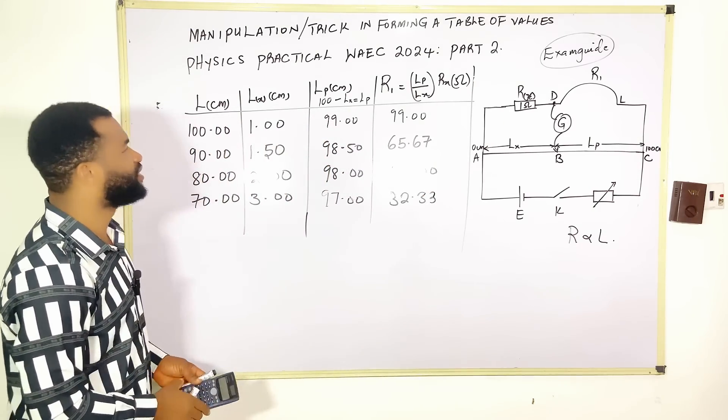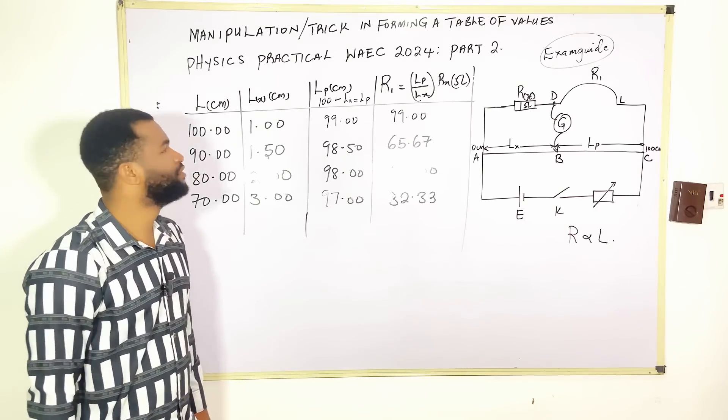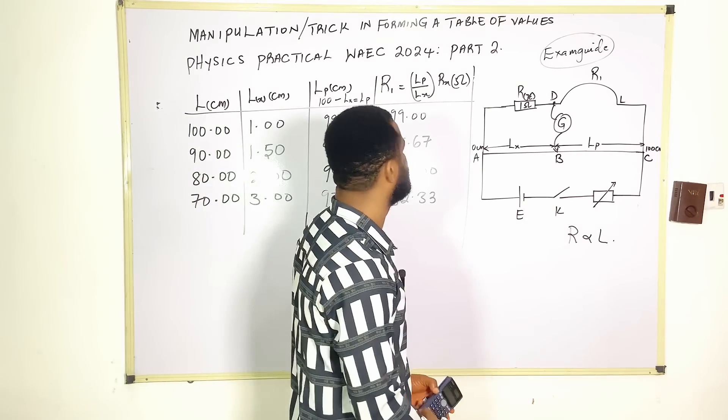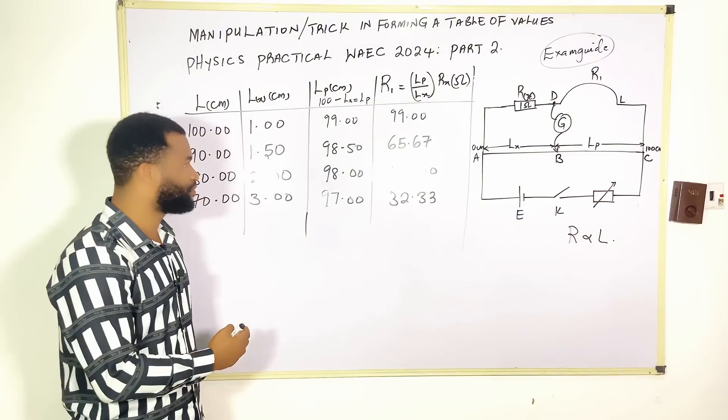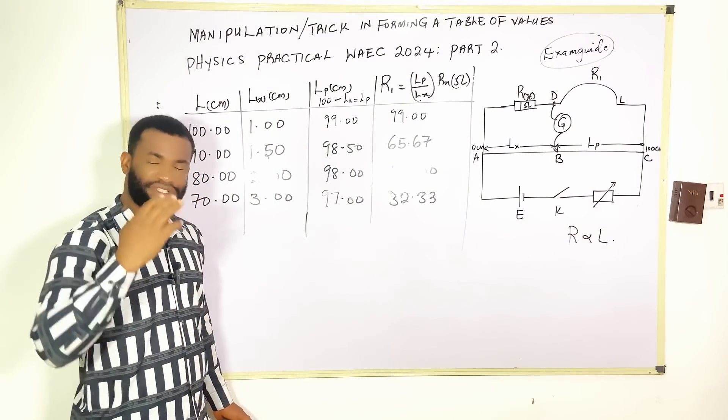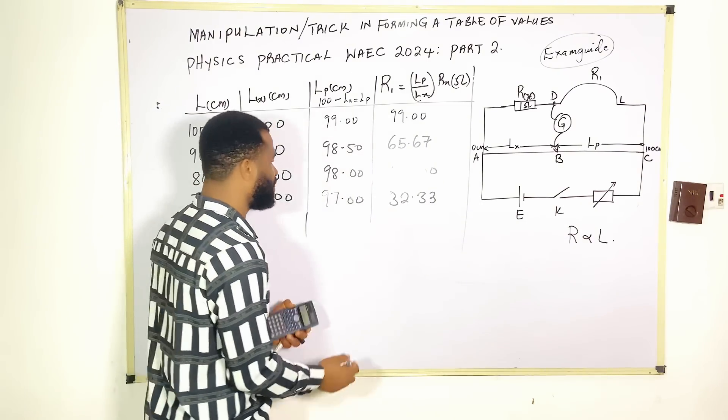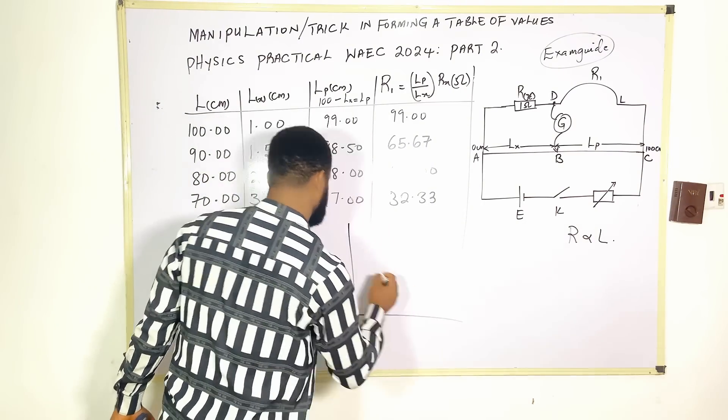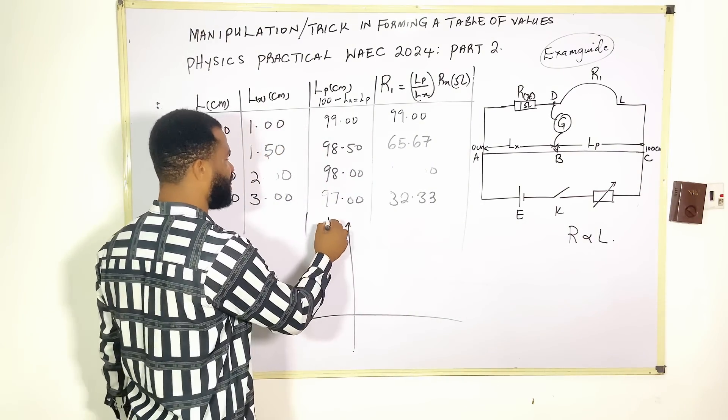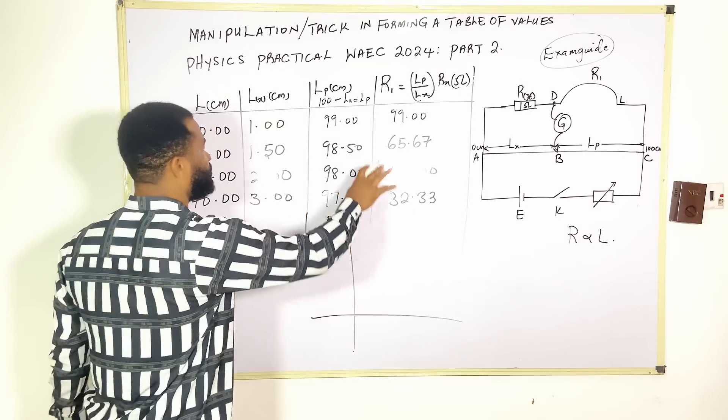This is the table of values I have. If you use this to plot a graph, you will definitely have a straight-line graph. That straight-line graph will be R2. Remember, what I have done is for R1.